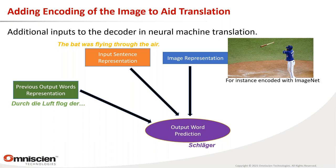The solution is to have both an input sentence representation and an image representation, with both contributing to predicting output words alongside previously generated words. An additional image encoder component enables better disambiguation and better translation performance overall.